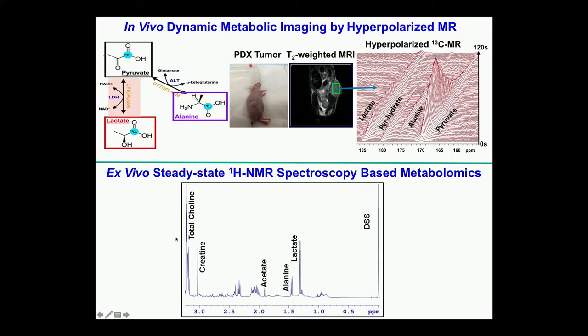This is a mouse with a pancreatic tumor — patient-derived, meaning the patient came to MD Anderson, had surgery, we took the tumor out and grew it in the mouse. Different patients have different levels of cancer aggressiveness, so we can study them in real time in mice instead of patients. In mice, you have a shorter time window, so you can try different therapies; if it works in mice, you can then translate to the patient.